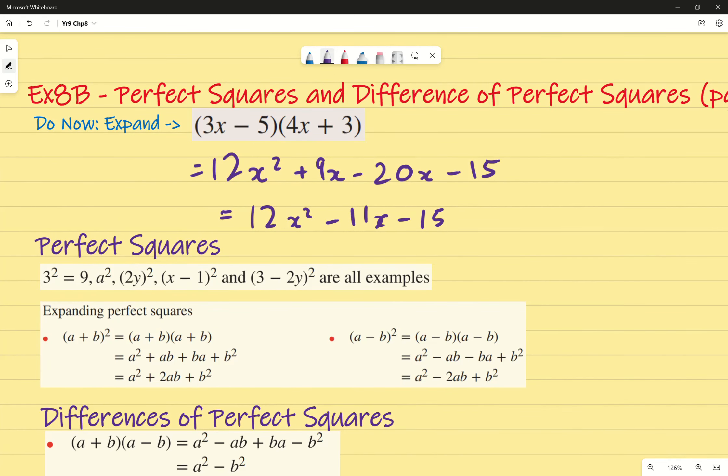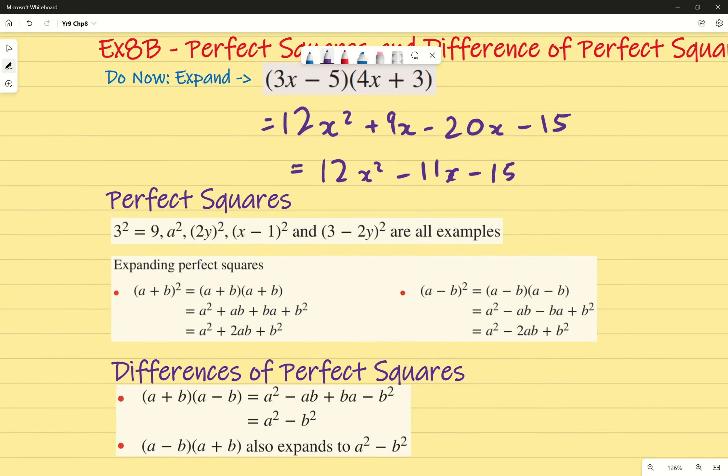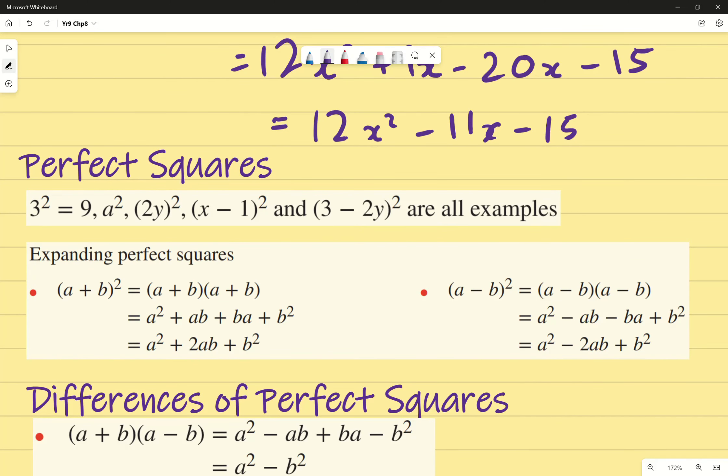Today we're focusing on perfect squares and difference of perfect squares. We've briefly looked at this, but the idea of perfect squares goes back to even year 7. We're focusing on the idea of numbers that we can get by squaring a nice number. For example, 3² gives us 9, so 9 is a perfect square. (2y)² - now y is not a number that we know, it could even be 0.843 which is not a nice number, but (2y)² is a square number. As you remember from our diagram last lesson, it's a square that's 2y by 2y. (x - 1)² - same thing, it's squared so therefore it's a square number. (3 - 2y)² - same thing. They're all examples of perfect squares.